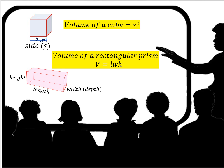Now let's look at the volume of a rectangular prism. The volume equals length times width times height. Supposing this were 2 meters, and this were 4 meters, and this were 3 meters: 2 times 4 is 8, times 3 is 24. If all dimensions were in meters, it would be 24 meters cubed, because volume is always in cubic units.